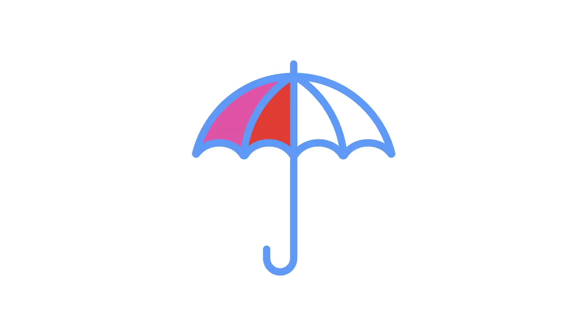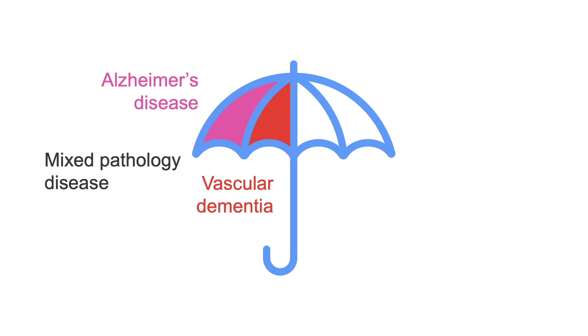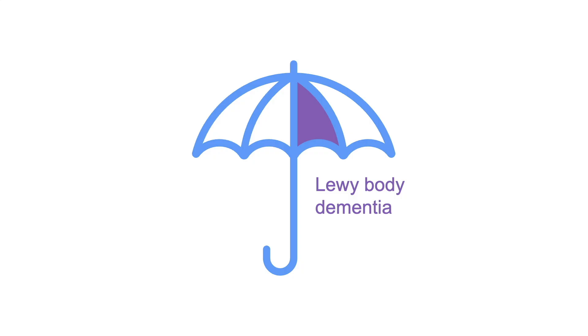Many patients will have features of both Alzheimer's and vascular dementia. If the patient does not fit neatly into one clinical picture, it is likely they have mixed pathology disease. The next most common type of dementia is Lewy body.